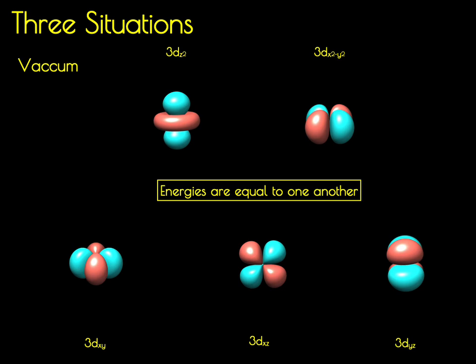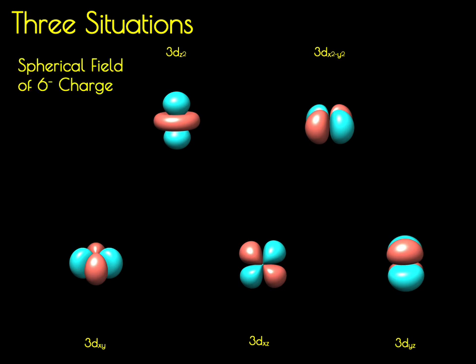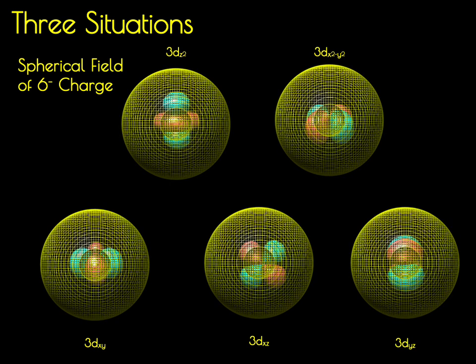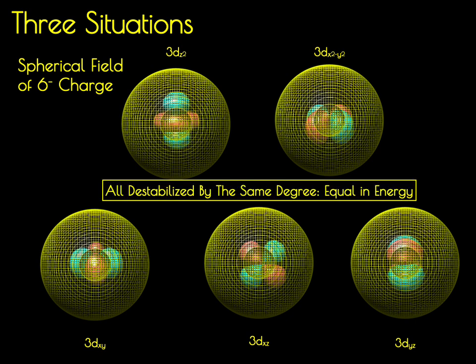We're now going to embed these orbitals in a spherical field of six negative charges. This spherical field is completely symmetric. Because it's completely symmetric, all of those d orbitals will be destabilized — destabilized because we have negative charges interacting with that electron. But because it's spherical, all of those d orbitals will be destabilized to the same degree, meaning that they will be five-fold degenerate in energy.